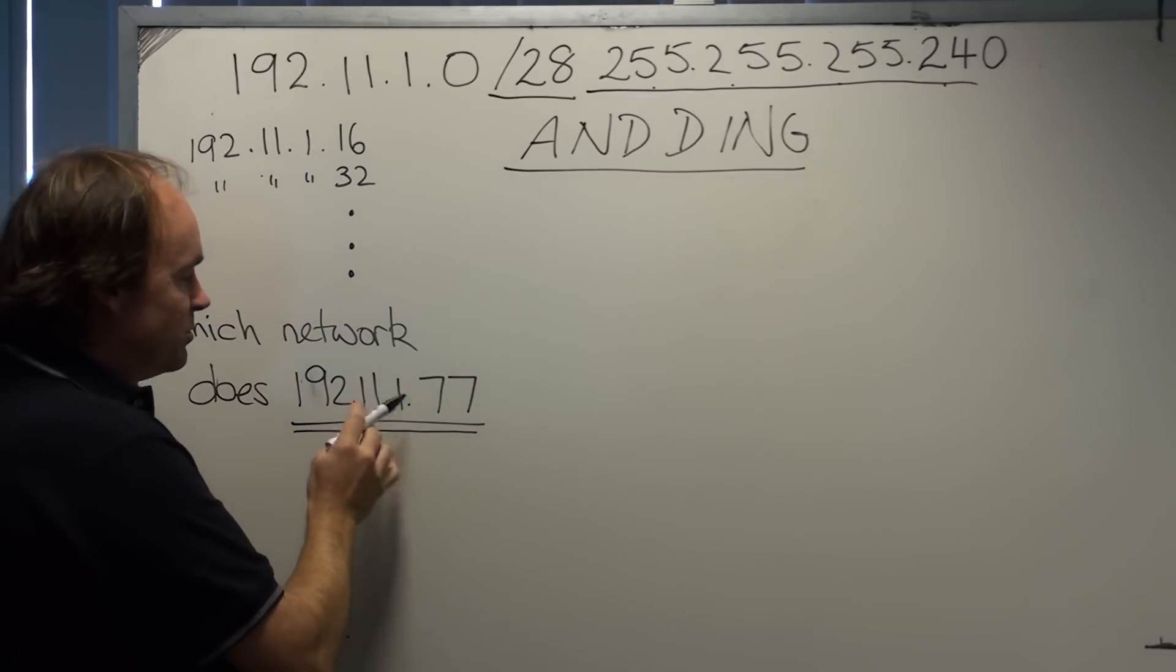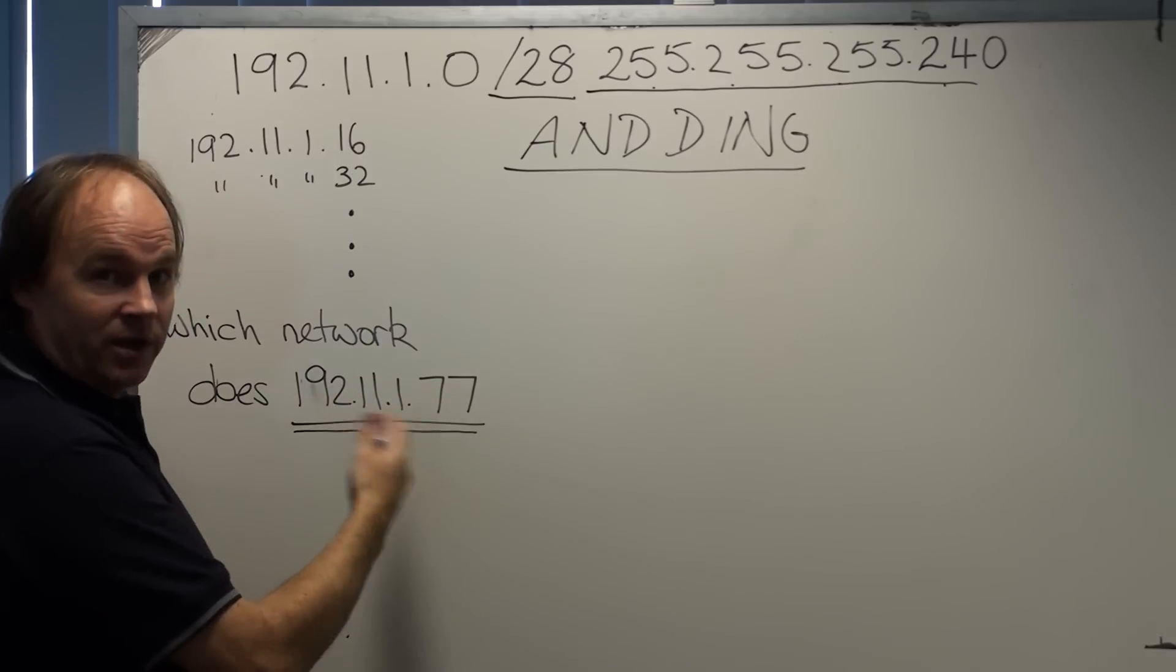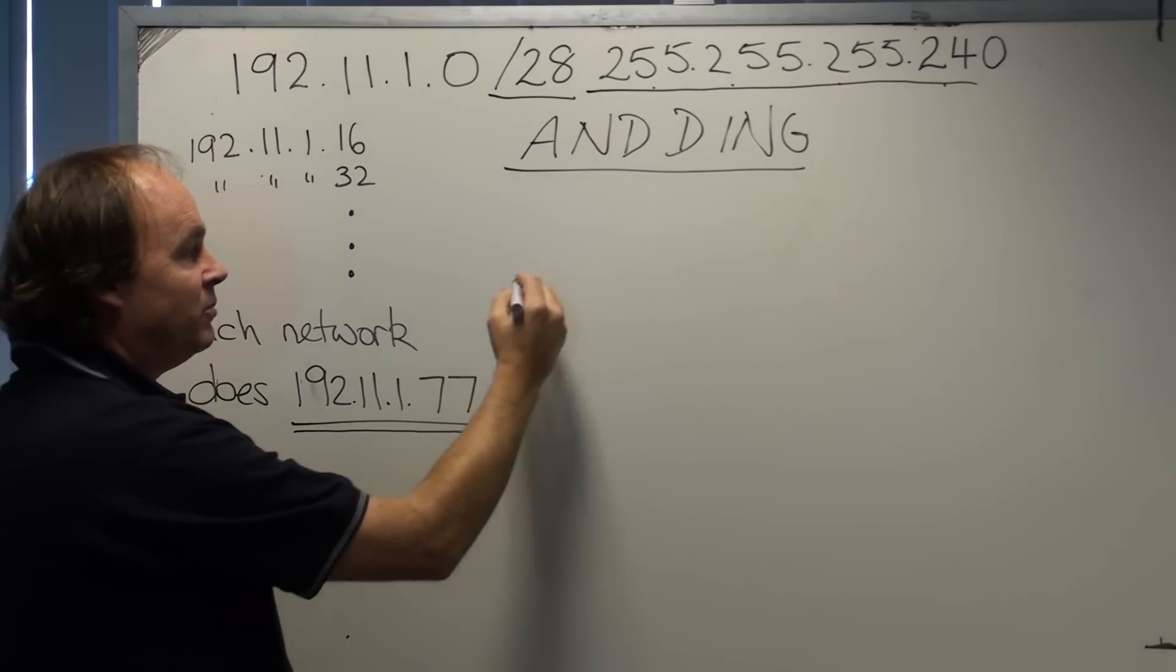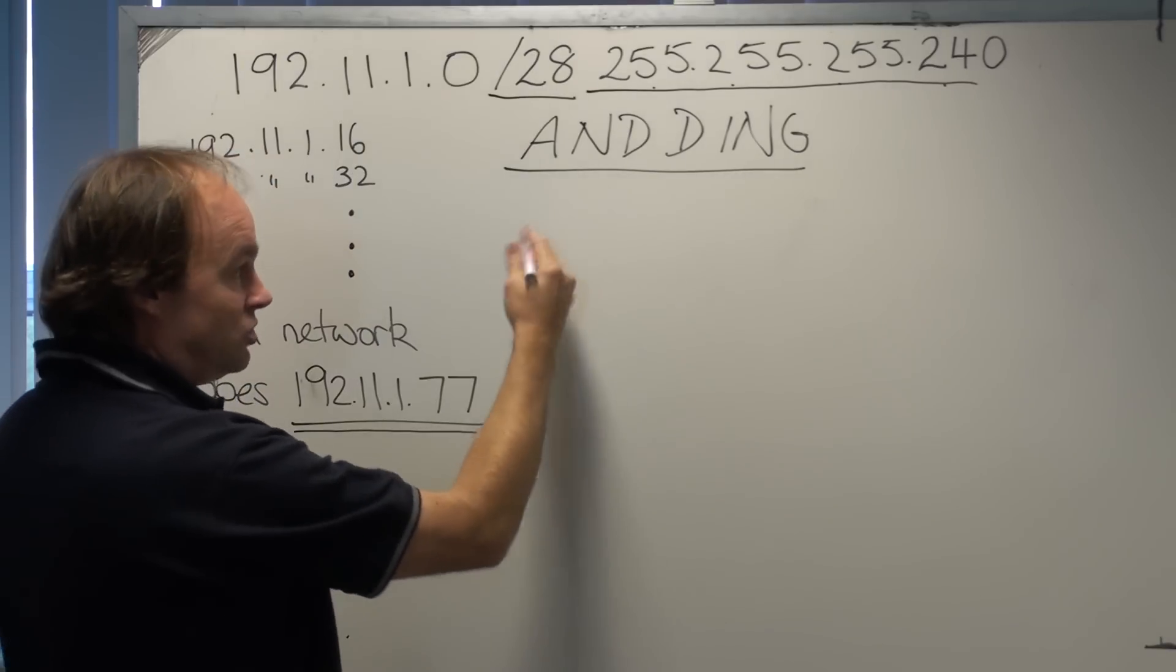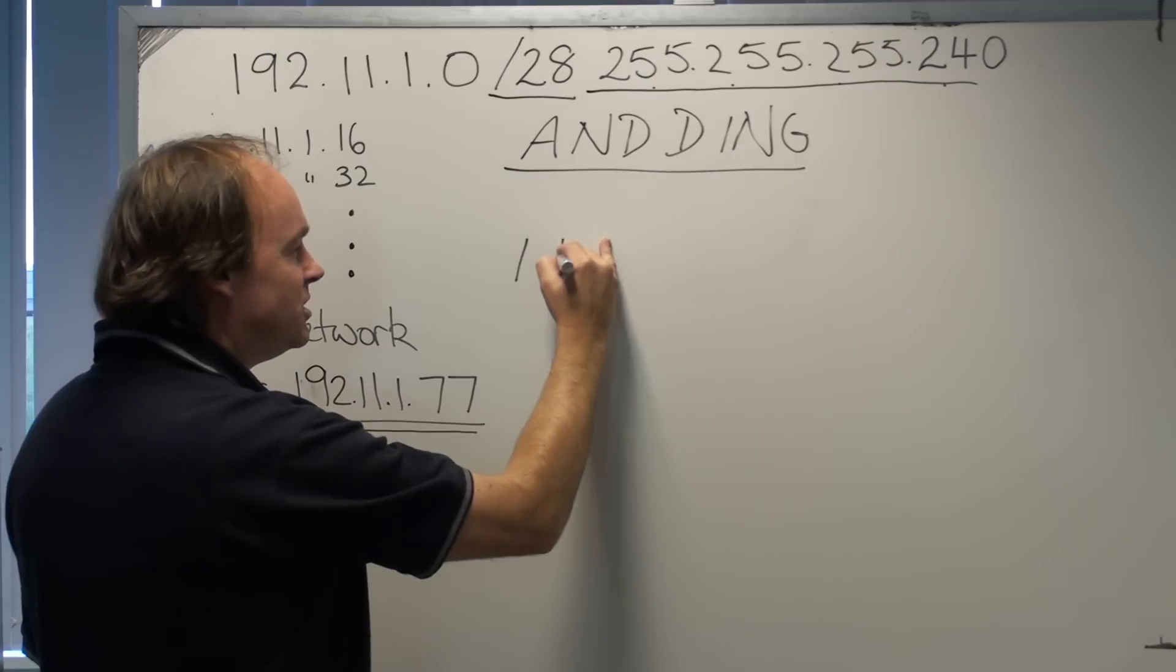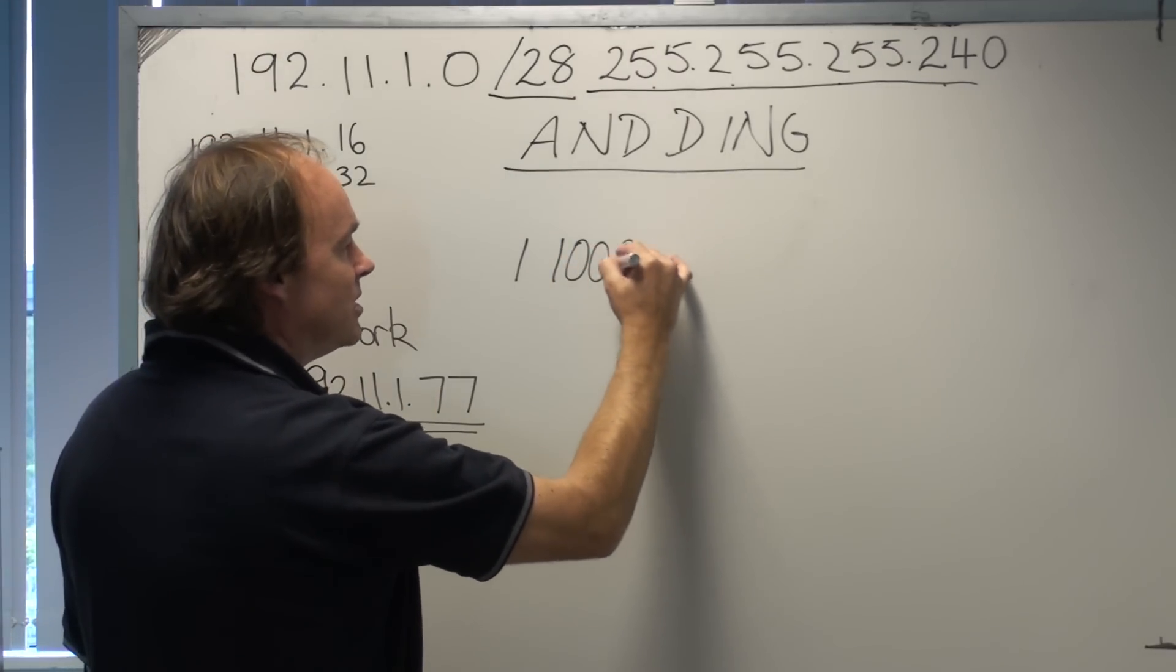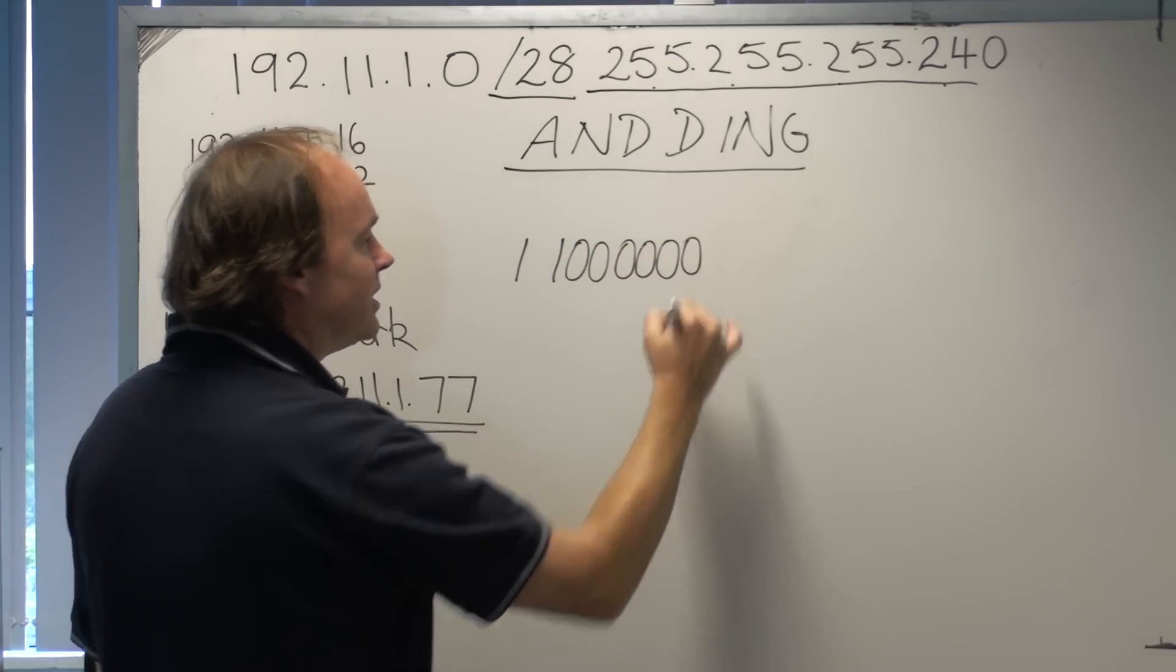Of course routers don't deal in decimal, they deal in binary. So we need to see what this number comes out with. In binary we see that 192 would be a 128 and a 64. That represents 192 and the rest is zeros. So just to show you the first octet in binary.